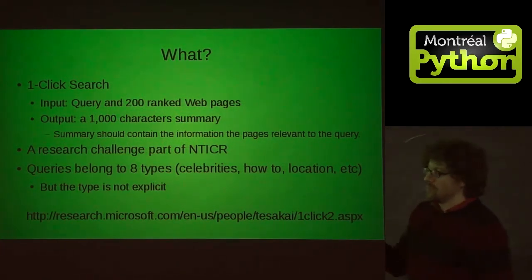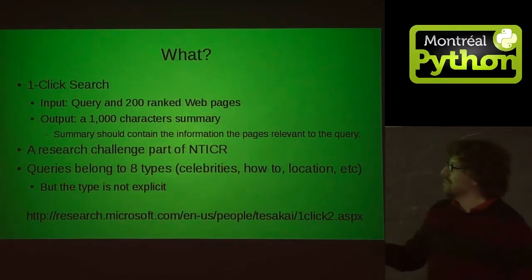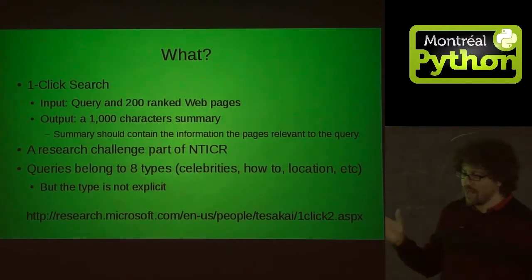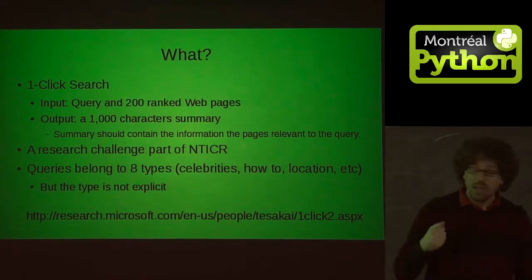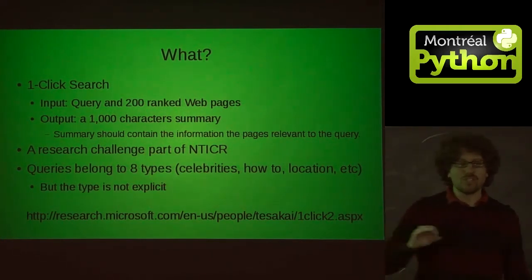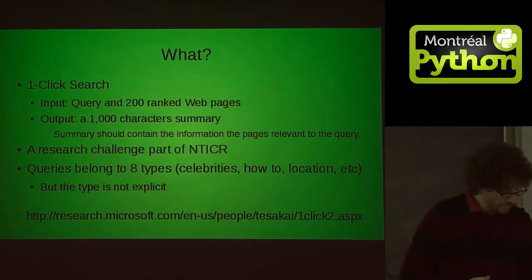To simplify the task a little bit, the queries belong to only eight set types — for example, celebrities, location, how-to, things like that — but they don't tell you which type is which for each query.